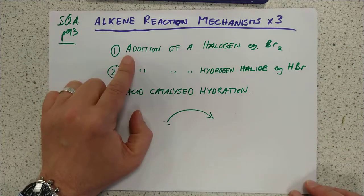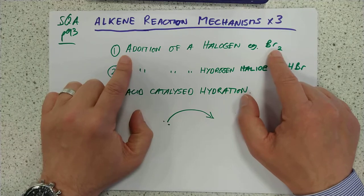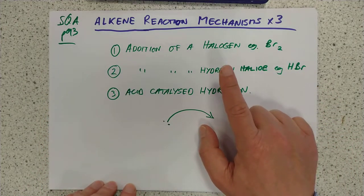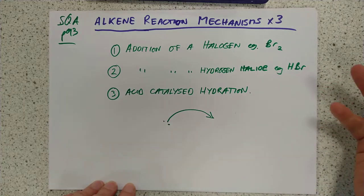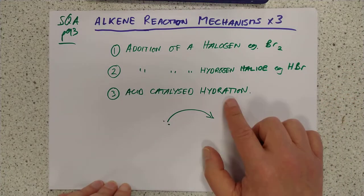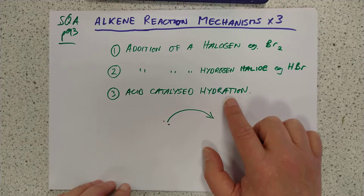I'd like to look at adding a simple bromine onto an alkene, adding a hydrogen halide like HBr onto an alkene, and lastly, acid catalyzed hydration of an alkene.